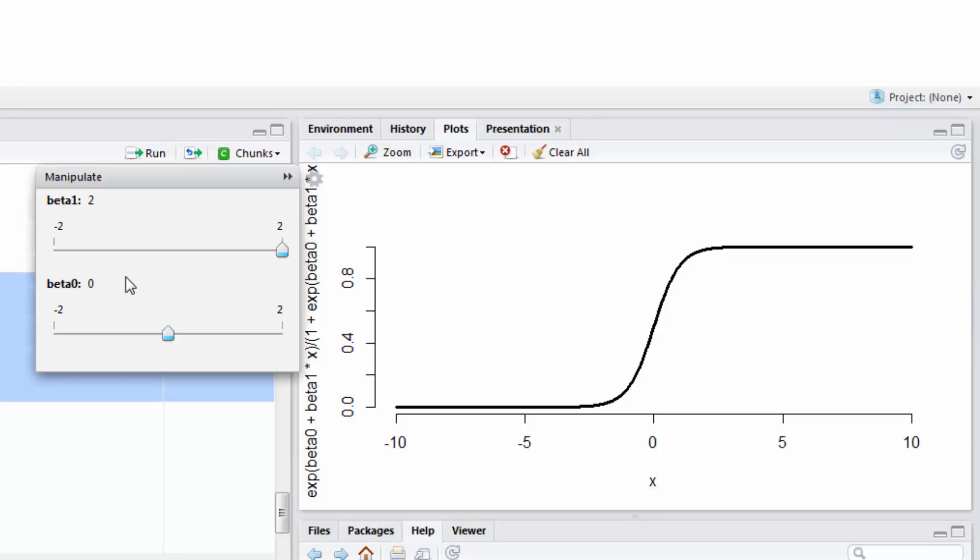And so here's my logistic regression curve, looks like an S kind of, and here's beta one. So let's see what happens as I render it or as I change it. Notice as I get it closer up to higher values, it becomes more peaked.